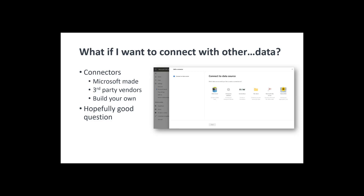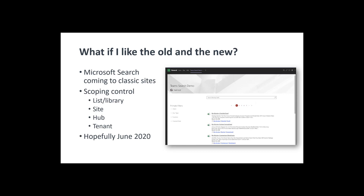Microsoft Search is also going to be coming to classic sites, so this won't require you to move to the modern SharePoint experience. This is supposedly launching in June 2020, though I've seen very little about it so I'm not super hopeful. But overall you'll have a lot of things where you can utilize Microsoft Search scoped down to lists, libraries, sites, hubs, and your tenant.